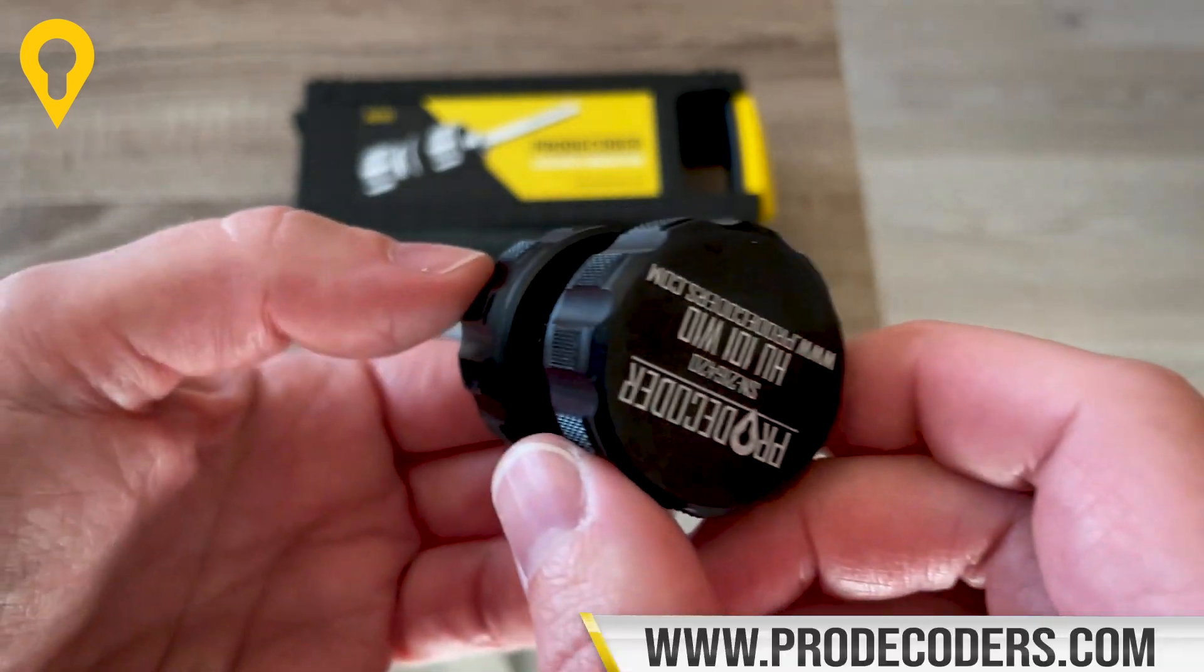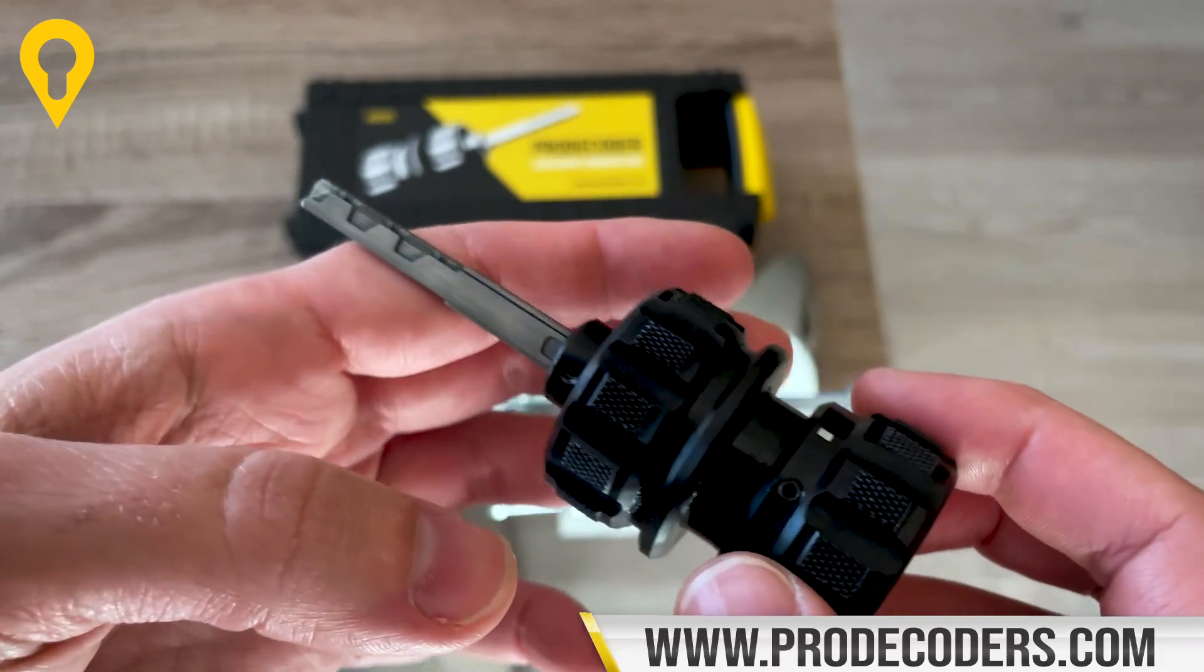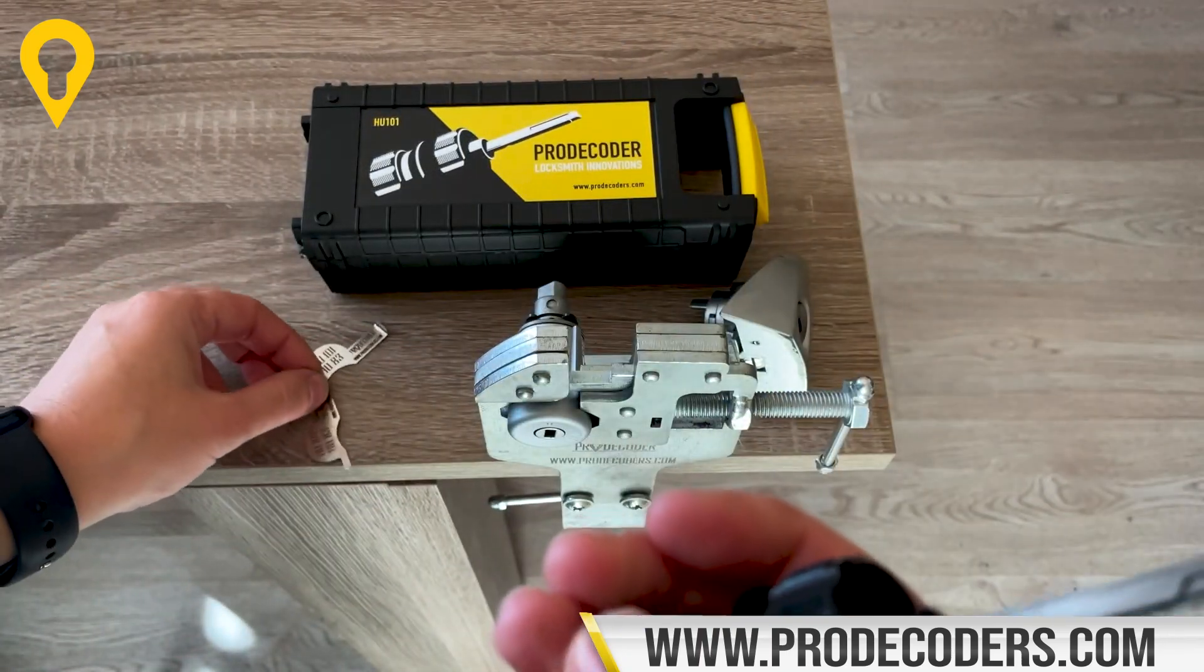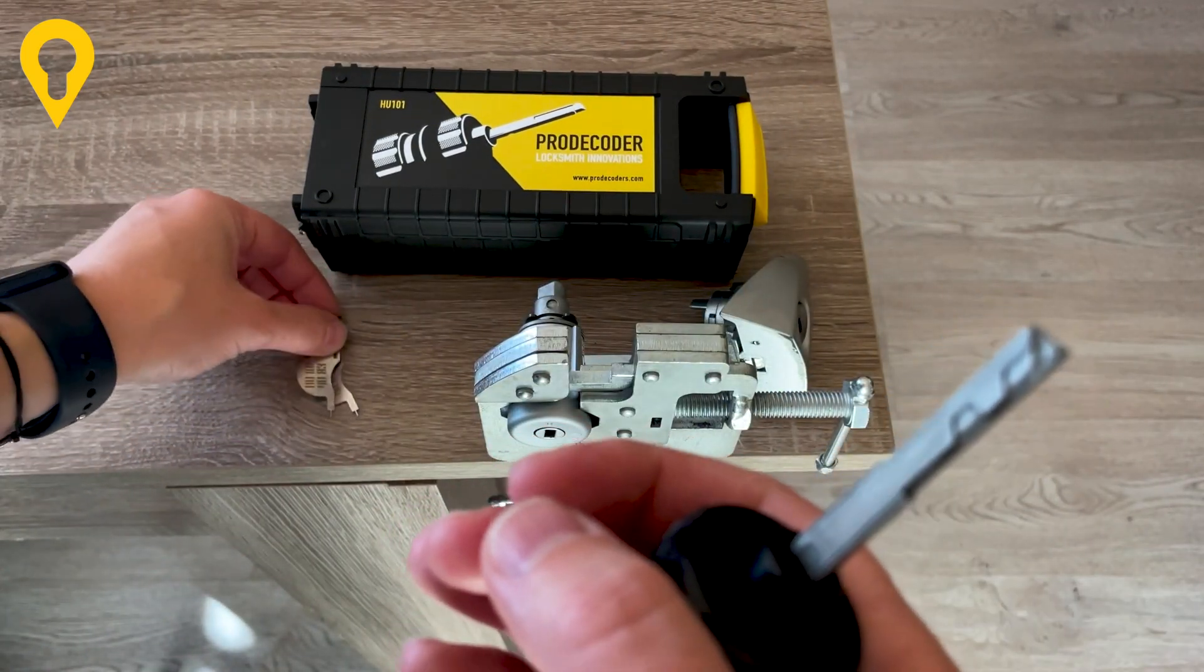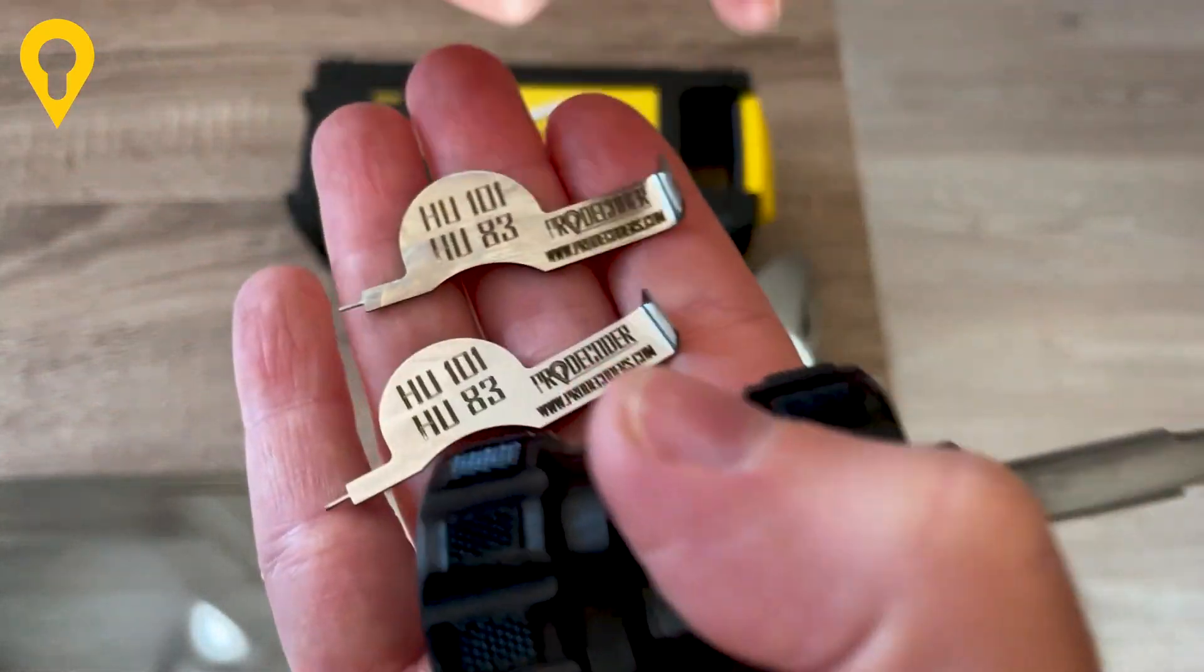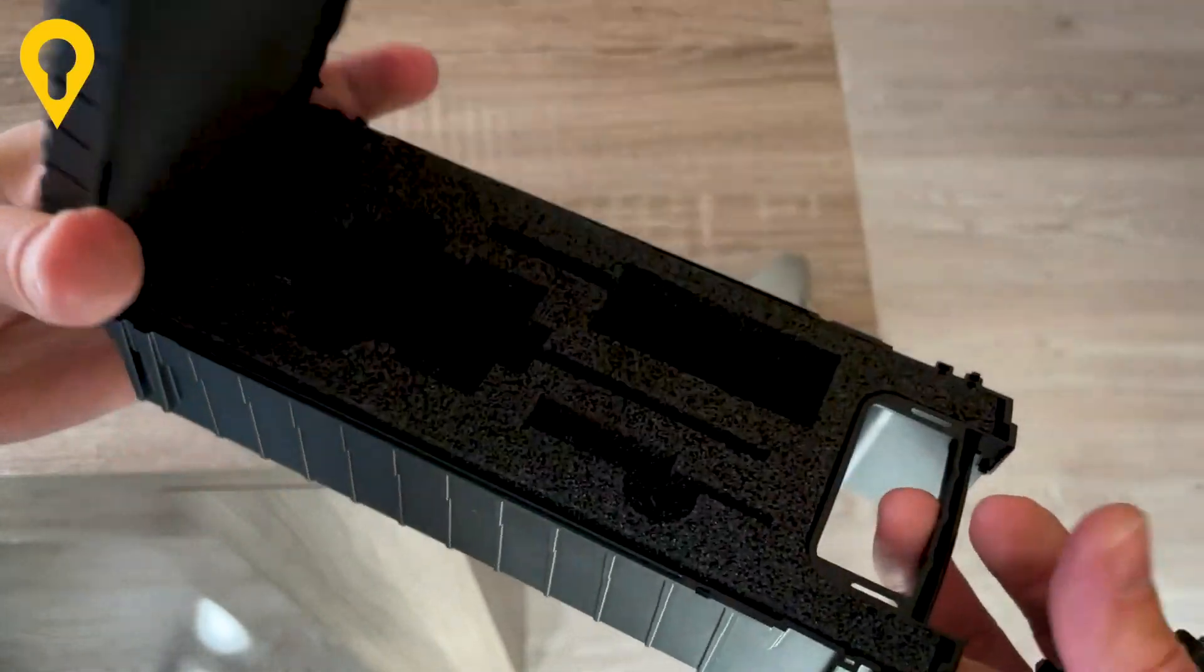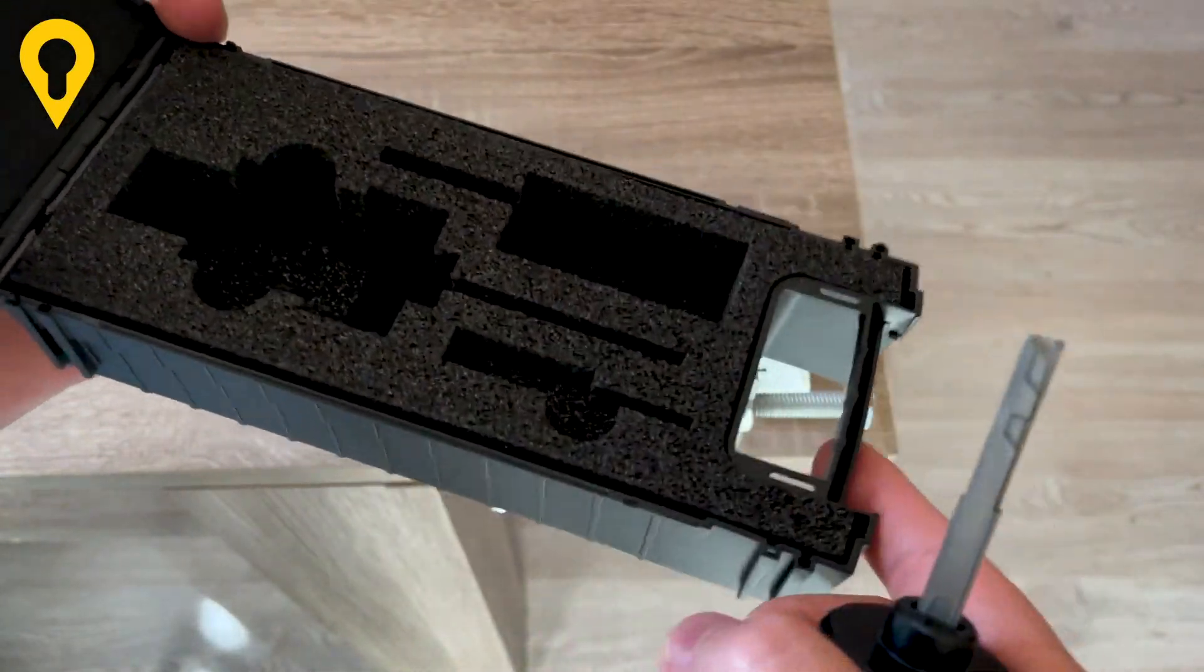ProDecoder A2-101, 10 pins decoder, the classical model for Ford, Rover, Jaguar and Volvo. Every decoder comes with two reset tools within such a box. Decoder, reset tools, tester key. No tester key with this model.